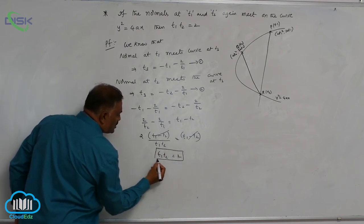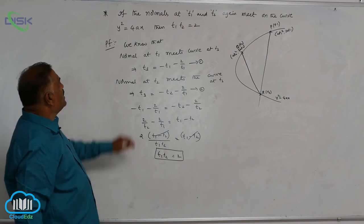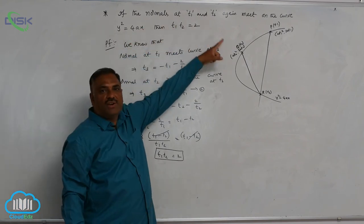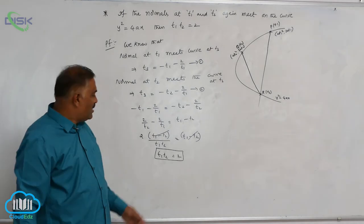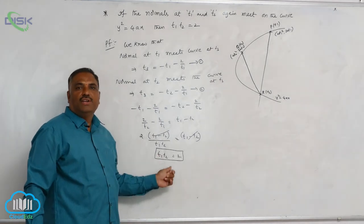So this is the most important result. As normals at t1 and t2 meet again on the curve at t3, then we have a result: t1·t2 = 2.